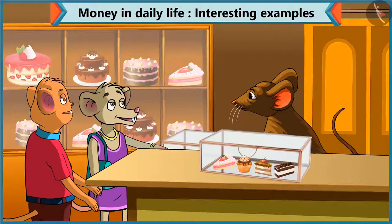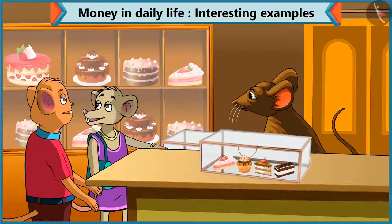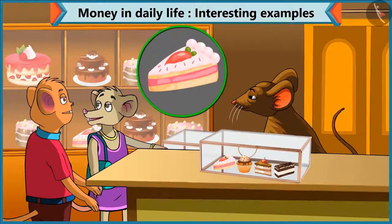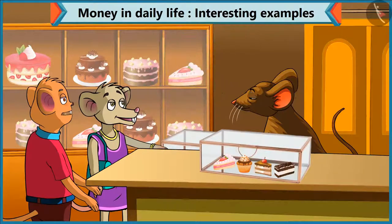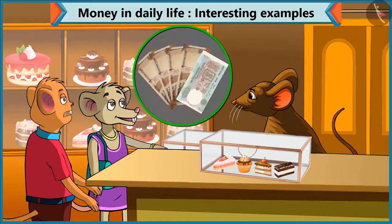Chi Chi, what pastry do you want to buy? I want to have this pastry. Brother, what is the cost of this pastry? This pastry is of 45 rupees, okay? Chi Chi, for 45 rupees, give 4 notes of 10 and 1 note of 5.